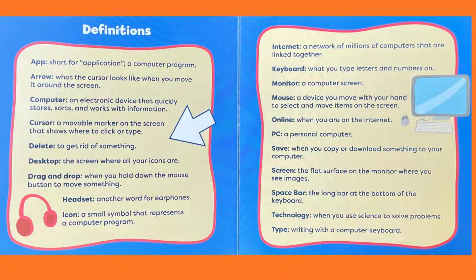Online: When you are on the internet. PC: A personal computer. Save: When you copy or download something to your computer. Screen: The flat surface on the monitor where you see images. Space bar: The long bar at the bottom of the keyboard. Technology: When you use science to solve problems. Type: Writing with a computer keyboard.